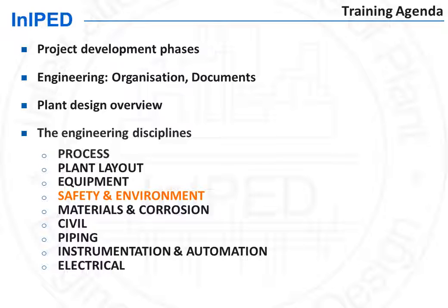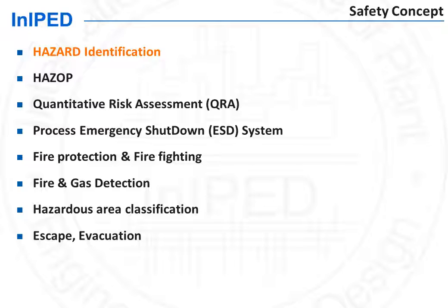The various aspects of the plant safety are summarized in the plant safety concept. This document is called a discipline design specification. It is the document that each discipline should issue prior to starting its design. It lists all the criteria that the discipline will use in its design work, such as applicable codes and standards. We will review each of the headings of the safety concept.